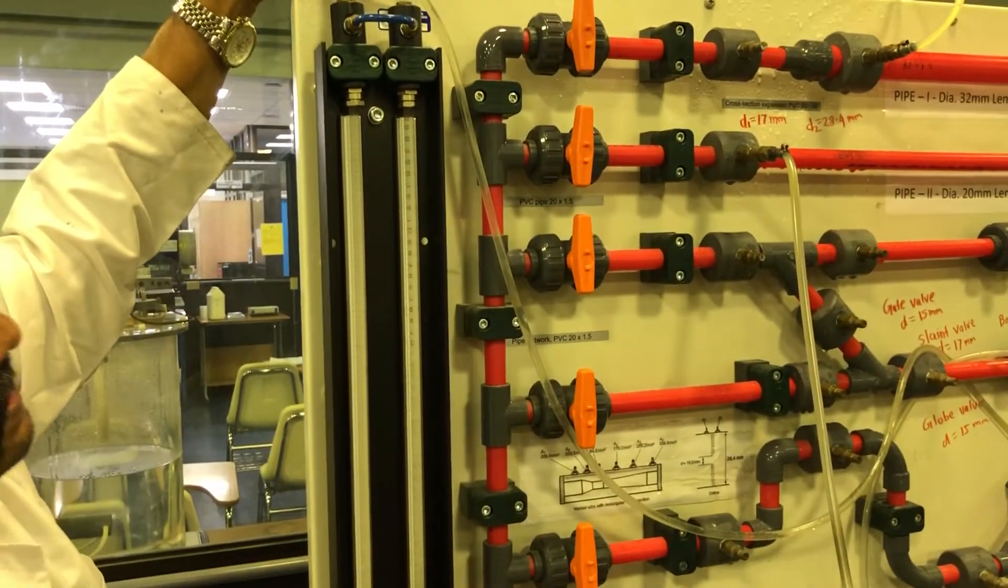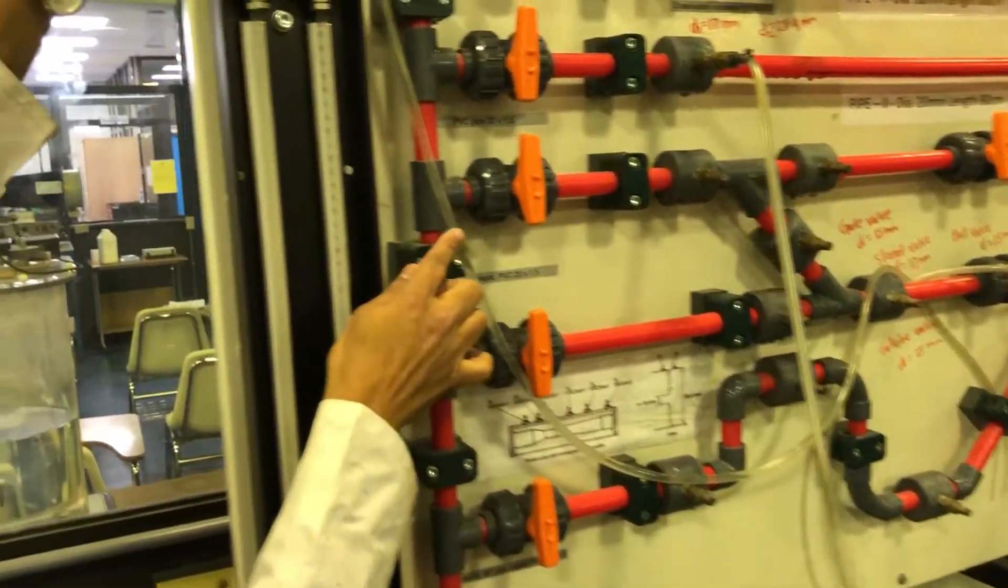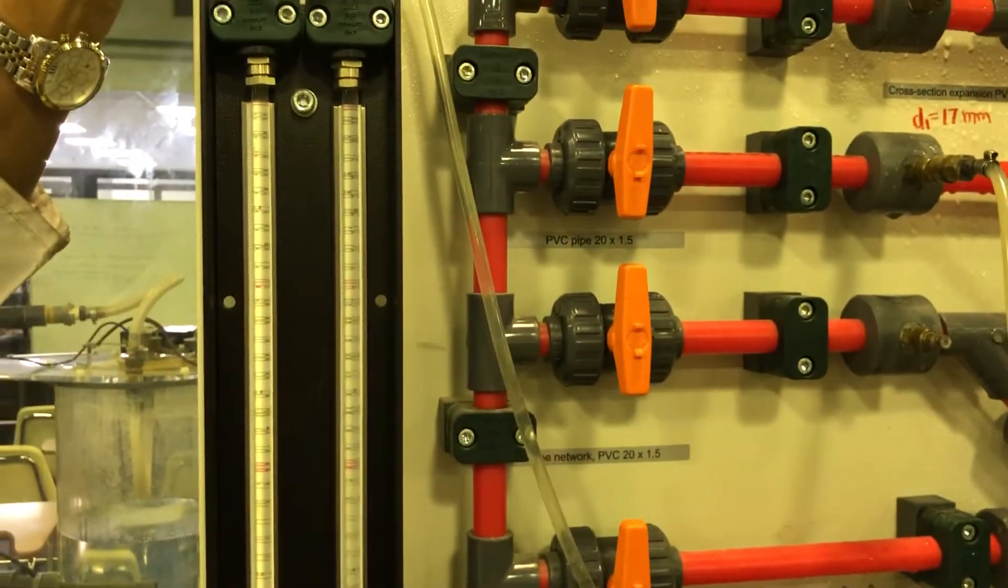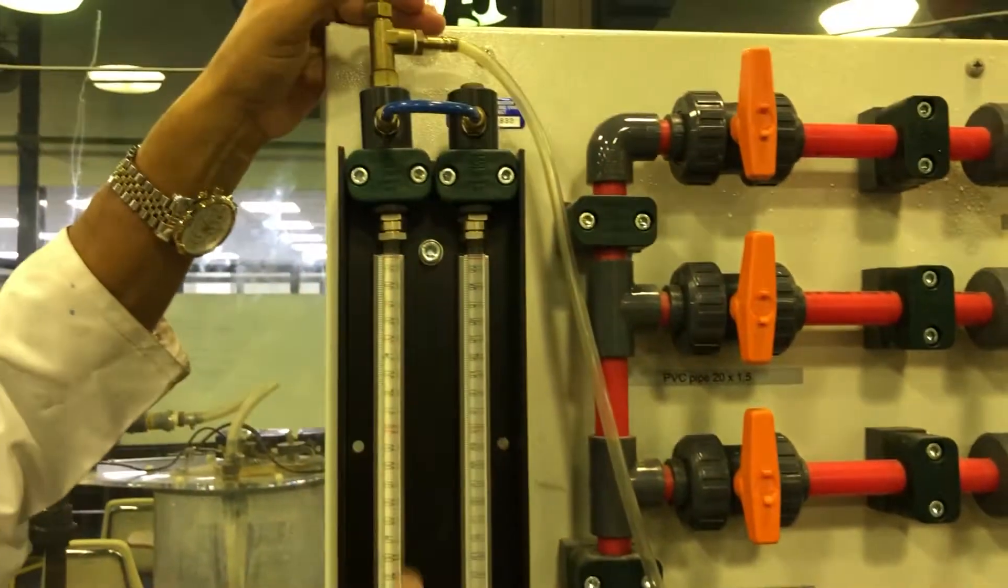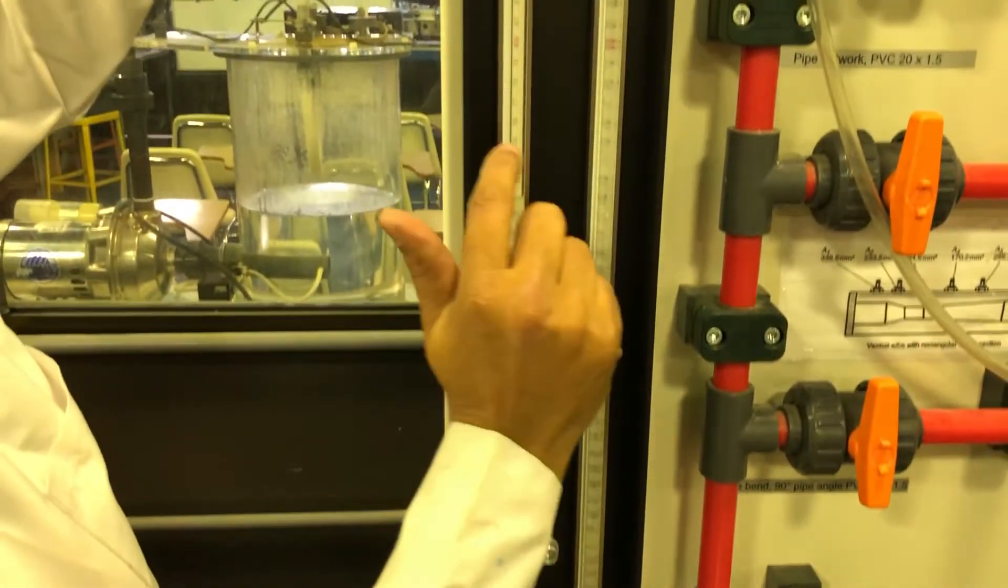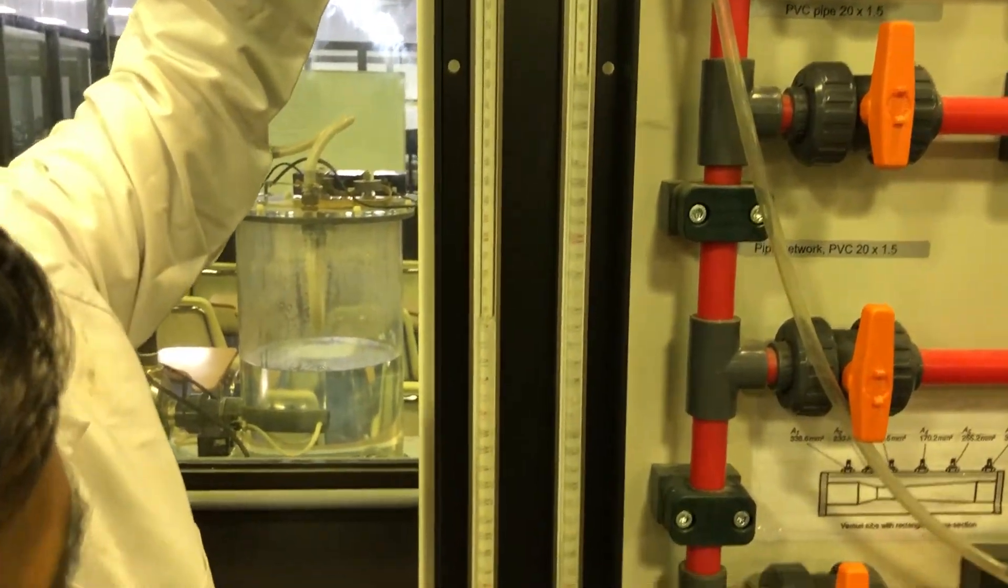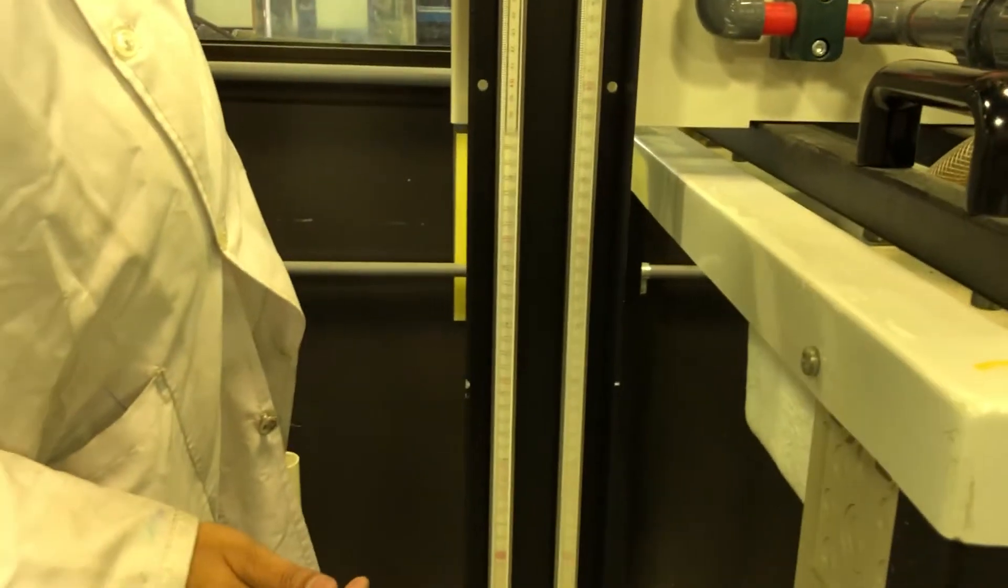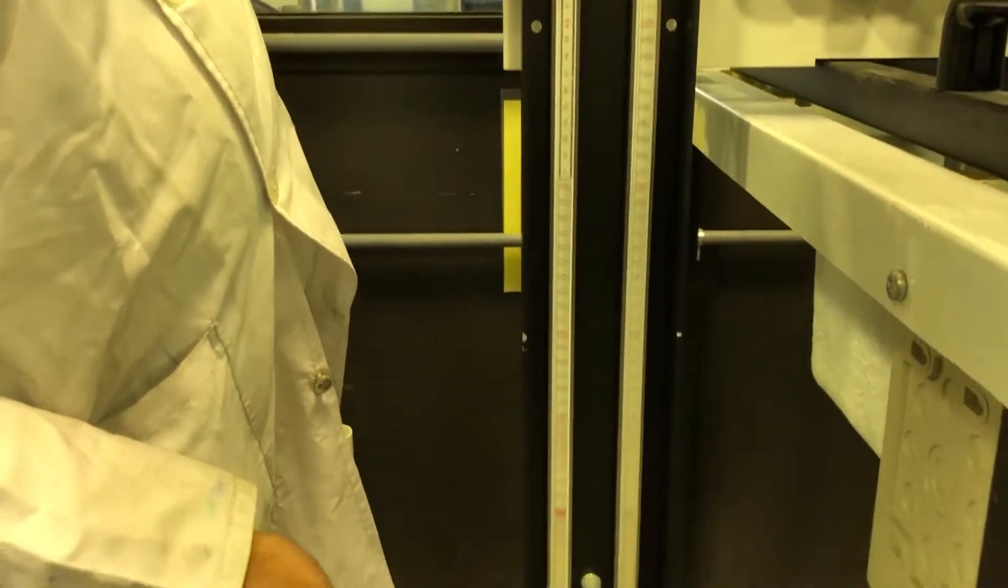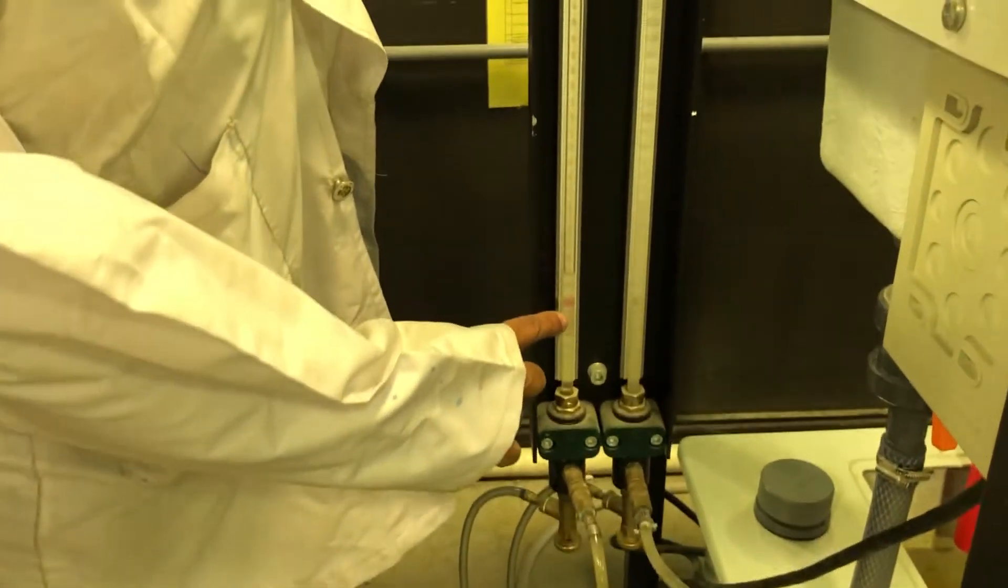Now I will introduce some air from this by opening this. Look at here, the air will come from this hose. See this air, it is coming. Now if I close this it will be balanced. But I want the same level at the bottom, so I will make it. Now I will close.